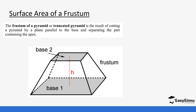We will take the area of the top base, then the area of the bottom base, and then we take the area of the curved surface, which consists majorly of trapeziums. We add all these areas together to get our total surface area.